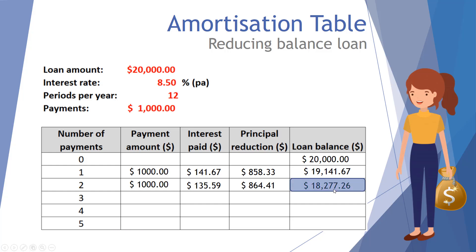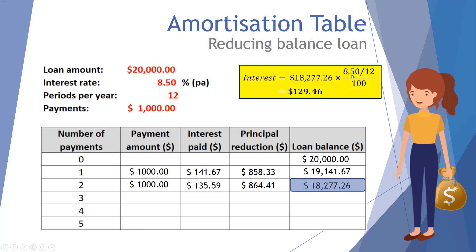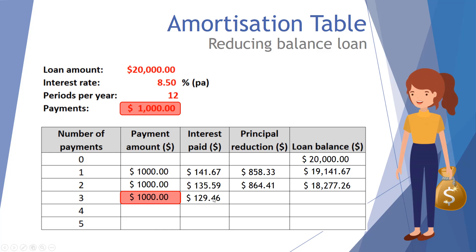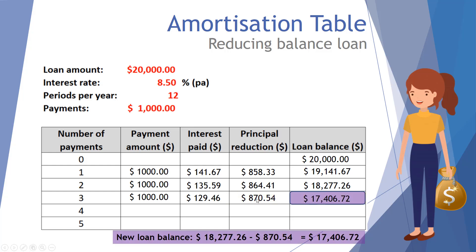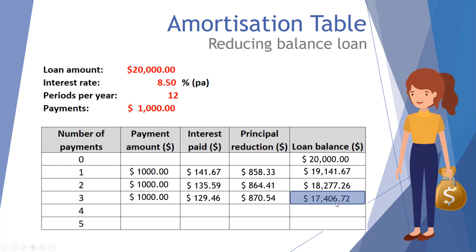We take that balance and multiply by the interest rate — 8.5 divided by 12, over 100 — to get the interest for the third payment: one hundred and twenty nine dollars and forty six cents. She pays a thousand dollars; one hundred and twenty nine forty six goes to interest, and eight hundred and seventy dollars and fifty four cents reduces the loan. Subtracting from eighteen thousand two hundred and seventy seven dollars and twenty six cents leaves a balance of seventeen thousand four hundred and six dollars and seventy two cents.